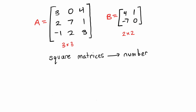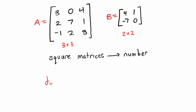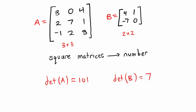We can talk about the determinant of A as a number that results from this matrix. In this case the determinant is 101, and the determinant of matrix B is 7. We're not going to worry about how these numbers were computed for the moment. This illustrates that the determinant is an operation that takes square matrices as inputs and outputs numbers.